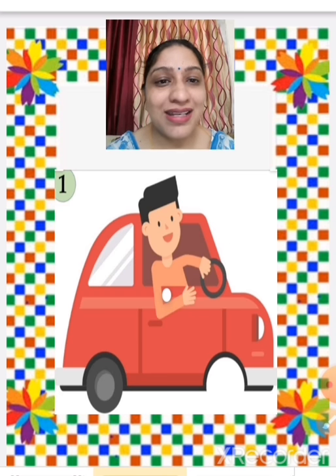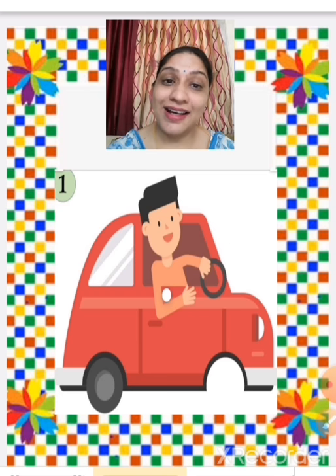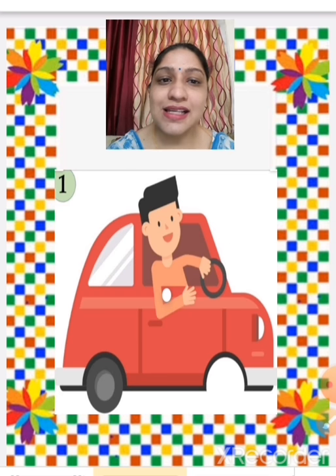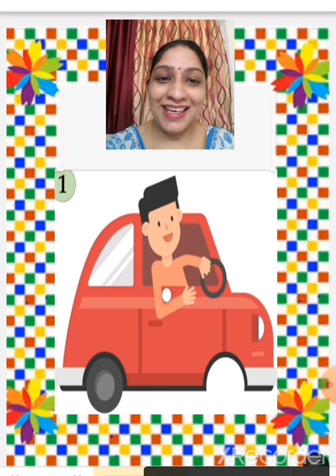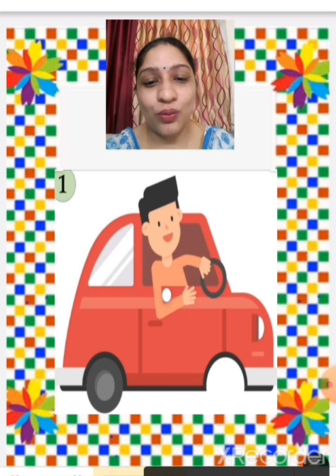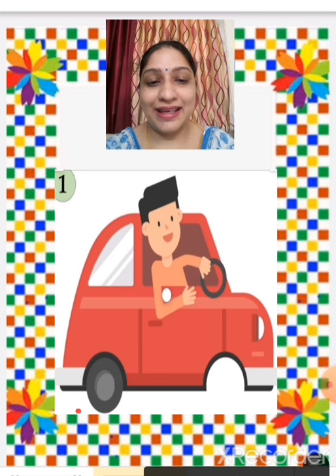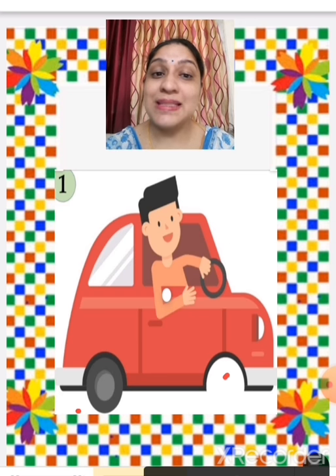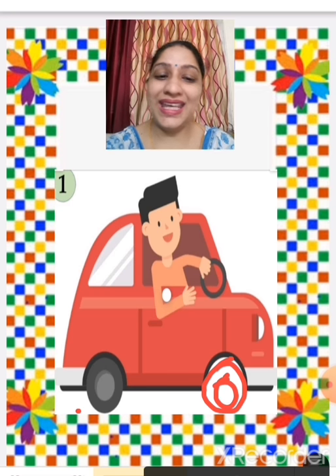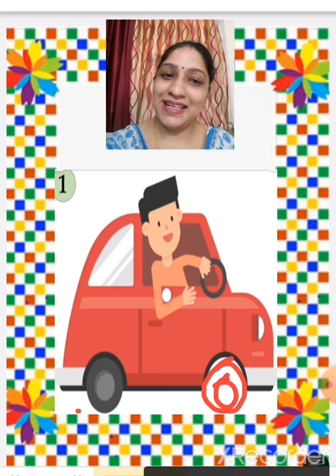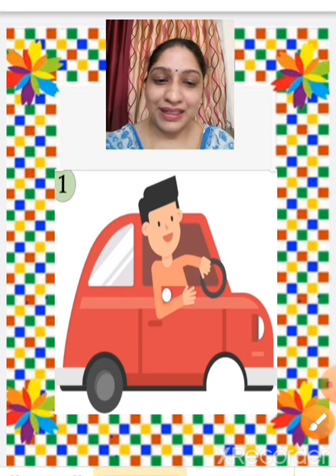A car is there, but something is missing. A wheel of the car is missing — one wheel is here and one wheel is missing. So we are going to draw a wheel. Now the car is complete.